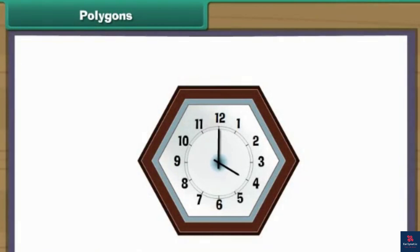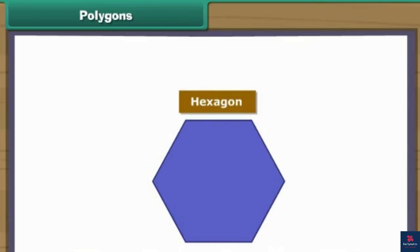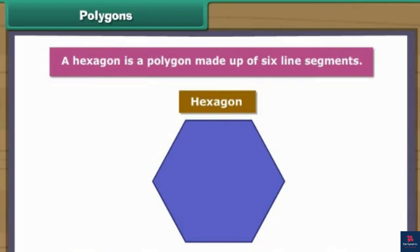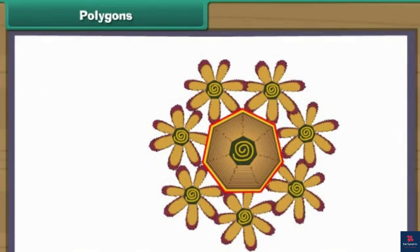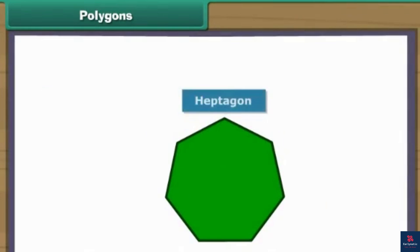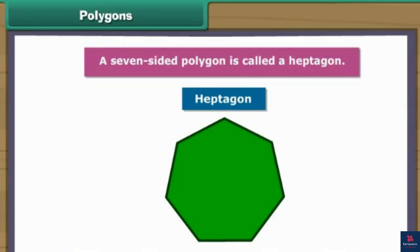Here is a clock. Let us provide its borders. We have a border of six line segments for the clock. A hexagon is a polygon made up of six line segments. Let us create a wall hanging using seven straws. The rainbow wall hanging with seven line segments is ready. A seven-sided polygon is called a heptagon.